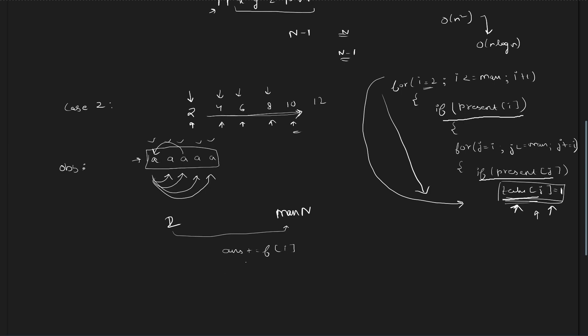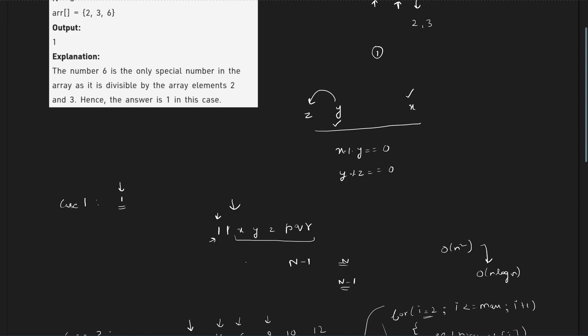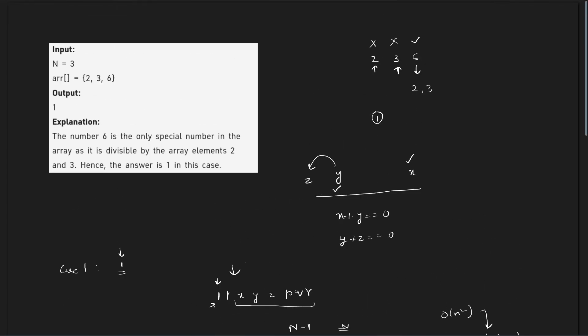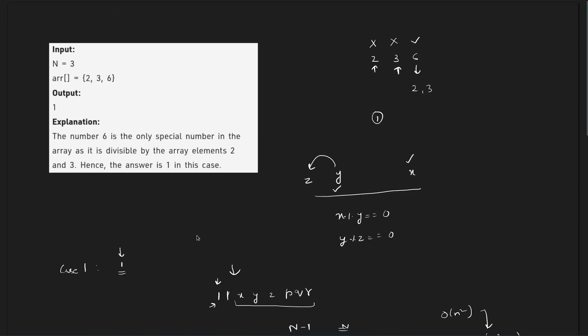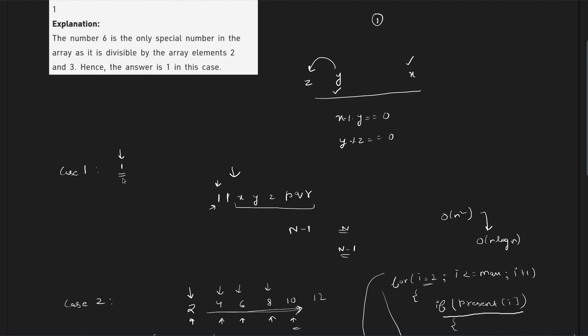This was all about the problem discussion. Let me quickly summarize: this problem says that all numbers which have at least one divisor present in the array are called special numbers and we have to count them. The base case is when 1 is present in the array — 1 will divide all other numbers so the answer is at least n minus 1.